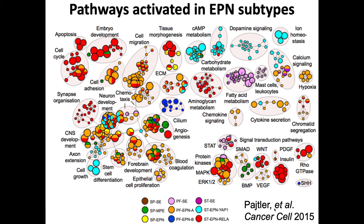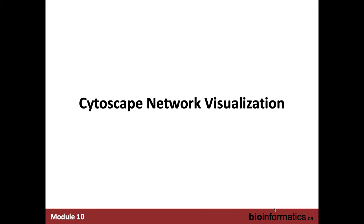This type of visualization obviously needs a little bit of manual curation, but the input is constructed automatically using the Cytoscape enrichment map app, which we will also practice during the next tutorial.